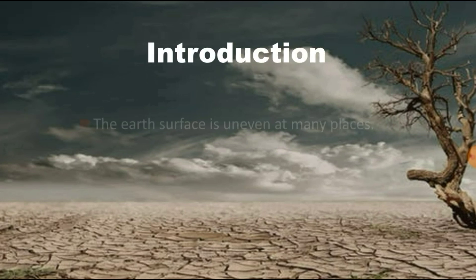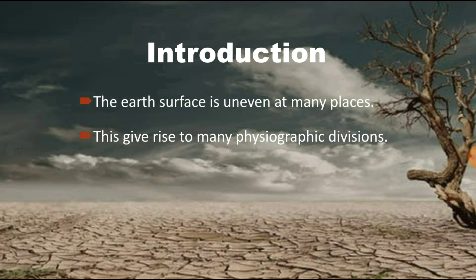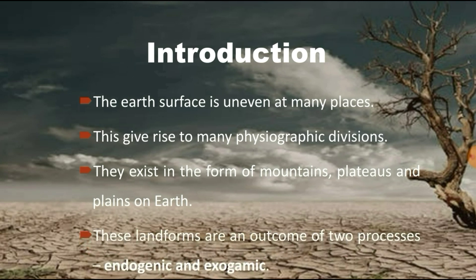Our earth is not a plain surface — it has lots of uneven surfaces at many places, as you must have observed. This gave rise to many physiographic divisions such as mountains, plateaus, plains, etc. These landforms are the outcome of two kinds of processes. The first is the endogenic process, and the second is the exogenic process. Due to these two processes, we have uneven terrain on the surface of the earth.